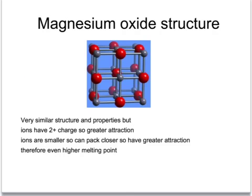Magnesium oxide has a very similar structure to sodium chloride, in that each magnesium ion is surrounded by six oxide ions, and each oxide ion is surrounded by six magnesium ions in this giant ionic structure. However, because the magnesium ions and the oxide ions have double charges, the attractions are even stronger, which means that magnesium oxide has an even higher melting point than sodium chloride. But, like sodium chloride, if you're able to melt the magnesium oxide or dissolve it in water, then the ions are free to move and it will conduct electricity. As a solid, because the ions are in fixed positions, it can't conduct electricity.